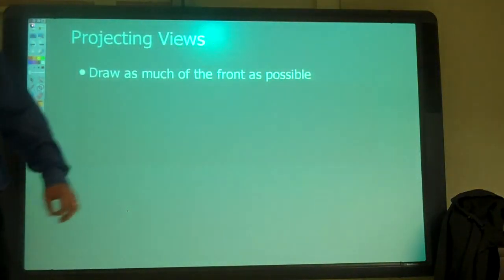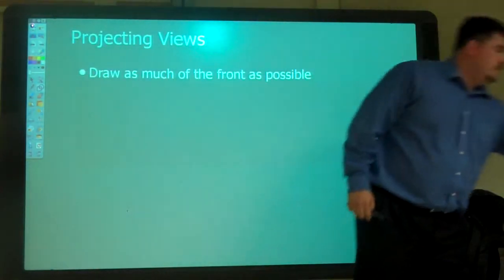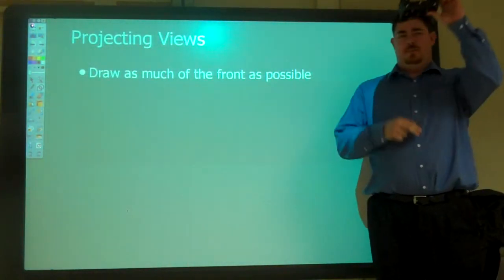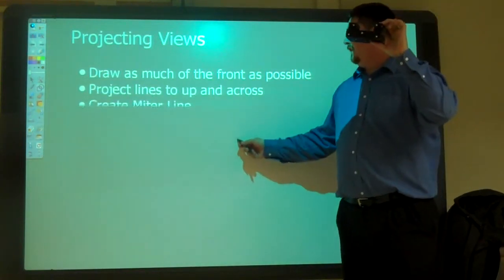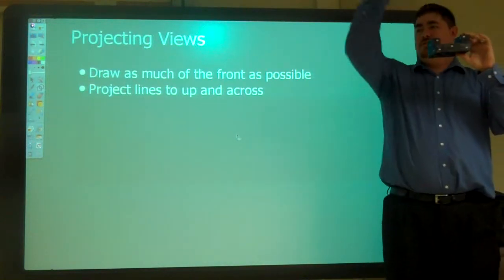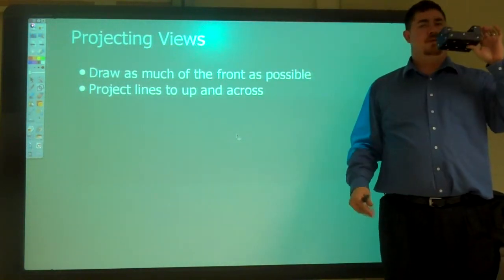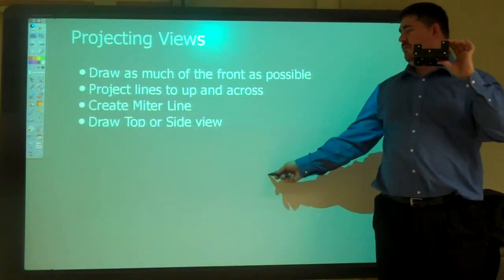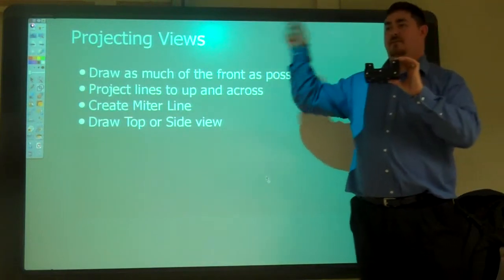Alright, so when we actually start drawing, we've got a few simple steps to follow. First is we want to draw as much of the front view as possible. So whatever view we picked that has the most about the part, we're going to draw as much of that as we can first. And then after that, we're going to project our lines up to the top view and over to the side view. Then we'll draw a Miter line, then we'll finish off either the top or the side, then we'll keep going back and forth.